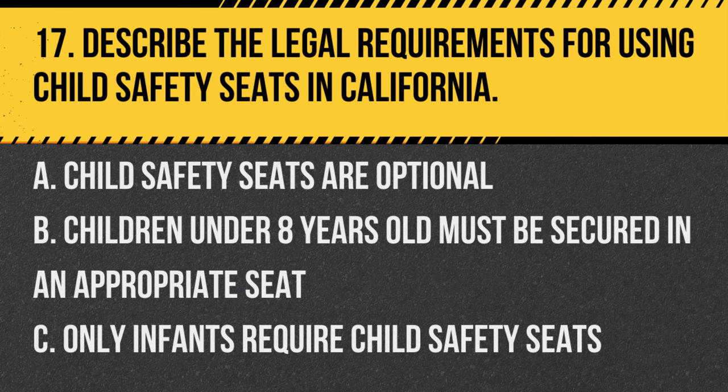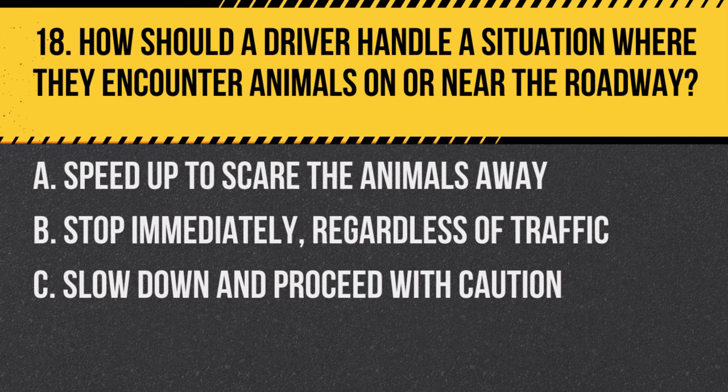Question 17. Describe the legal requirements for using child safety seats in California. A. Child safety seats are optional. B. Children under 8 years old must be secured in an appropriate seat. C. Only infants require child safety seats. Answer: B. Children under 8 years old must be secured in an appropriate seat. California law requires proper child safety seats for children under 8 or shorter than 4 feet 9 inches.